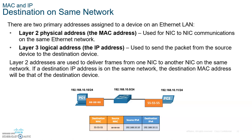Think of MAC addresses like buildings in an area — the number of the building. The area is the IP address, like a zip code. You have a zip code where there are a lot of buildings in it, and each building has a number. That number is the MAC address, and the zip code for that area is the IP address.